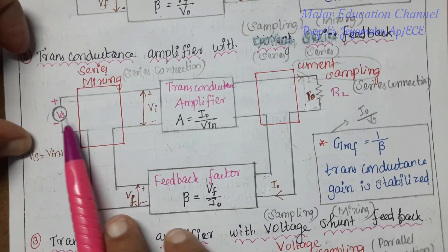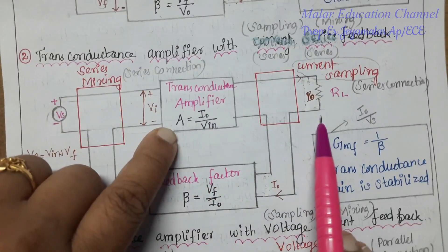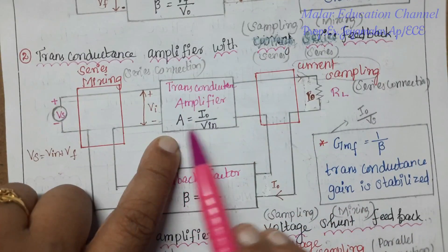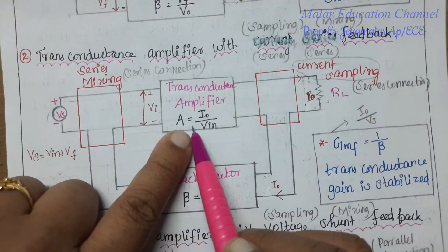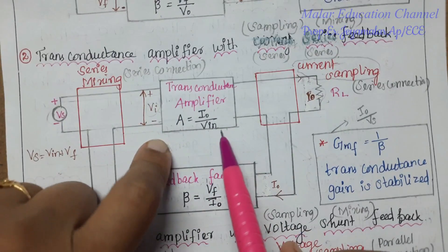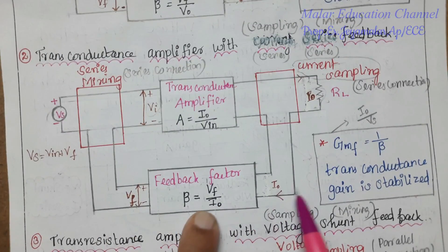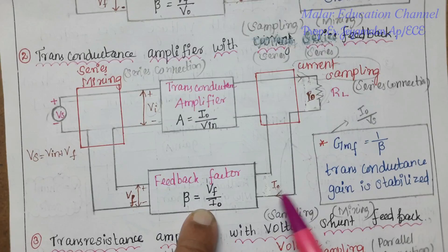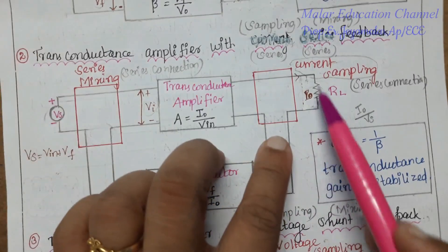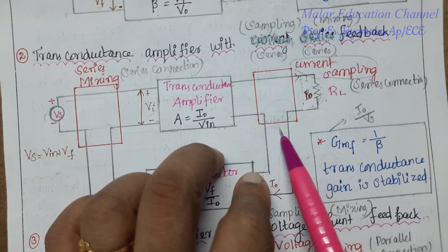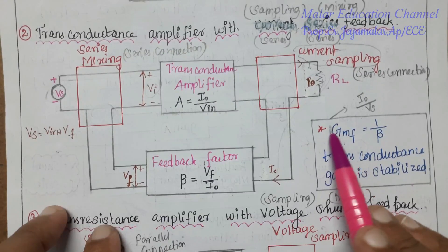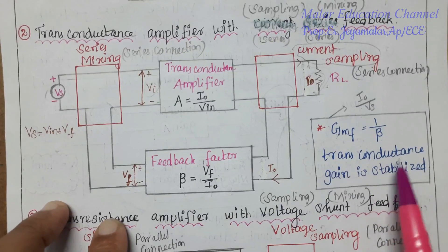For the transconductance amplifier: gain A = I-out divided by V-in (combination of current and voltage, hence 'trans'). Feedback factor beta = Vf divided by I-out. The output is current so the output connection is series; the input mixing is also series. The closed-loop transconductance gain Gmf = 1/beta, meaning transconductance gain is stabilized.